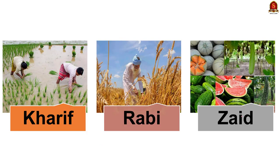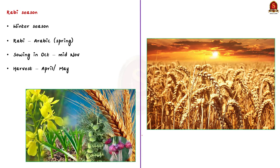They are Kharif season, Rabi season and Zayed season. Kharif season indicates the monsoon season, Rabi indicates the winter season and Zayed indicates the summer season. Today in our discussion, we are going to concentrate only on Rabi season. Rabi season coincides with the winter season, so the Rabi crops are also called as winter crops.